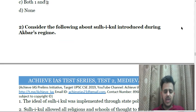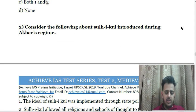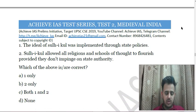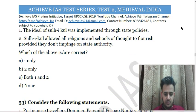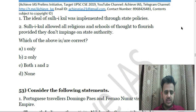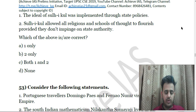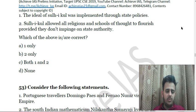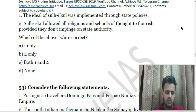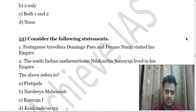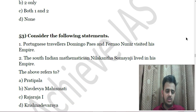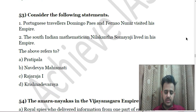Next: Consider the following about Sulh-i-kul introduced by Akbar's regime — First, the ideal of Sulh-i-kul was implemented through state policy; Second, Sulh-i-kul allowed all religions and schools of thought to flourish provided they did not impinge on state authority. Next: Consider the following statements — First, the Portuguese travelers Domingo Paes and Fernão Nunes visited his empire; Second, the South Indian mathematician Nilakantha Somayaji lived in his empire. Choose the correct answer.